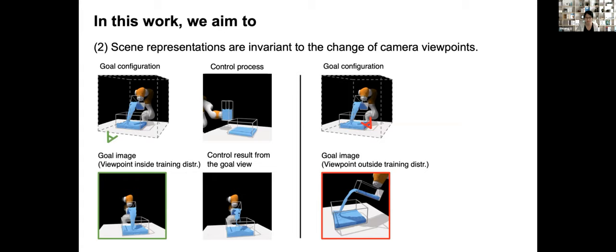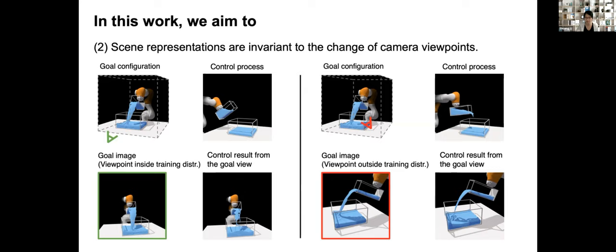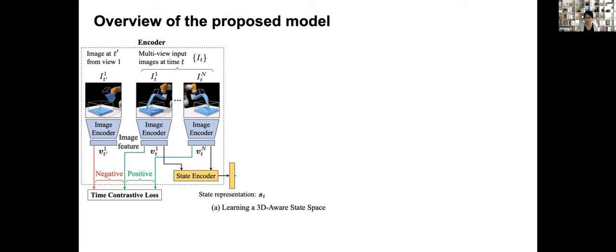We also hope that the learned scene representations are invariant to the change of camera viewpoints, as shown in the following examples. In the last example, we show that the viewpoint of the goal image given to the robot is inside the training distribution. In the right example, we show that the viewpoint of the goal image is outside the training distribution. The videos show the result of our proposed method. Our model can control the upper container and pour certain water to the lower container, which is close to the given goal image.